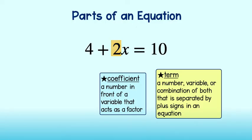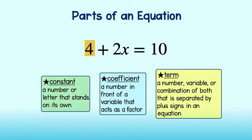If a term is simply a number or a letter that stands on its own, such as this 4 here, it is called a constant. Something that is constant remains unchanging. We call it a constant because there is nothing affecting its value, such as a variable through multiplication or division. Therefore, its value will remain steady or constant.